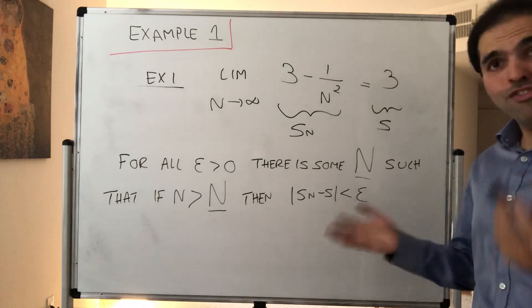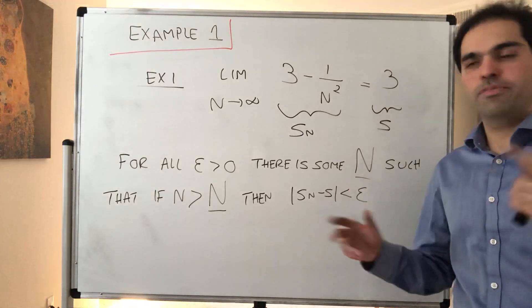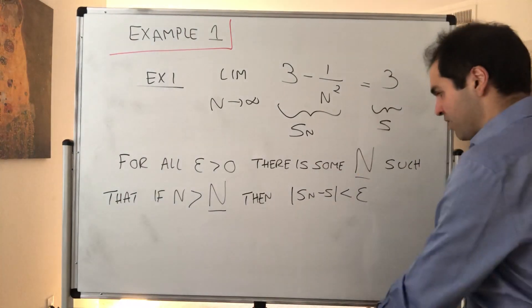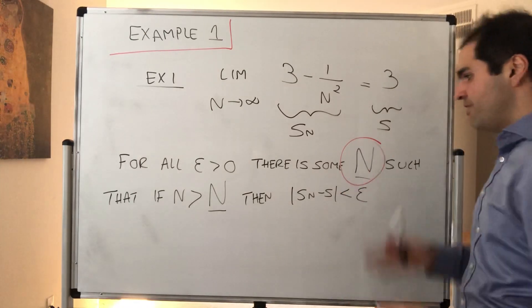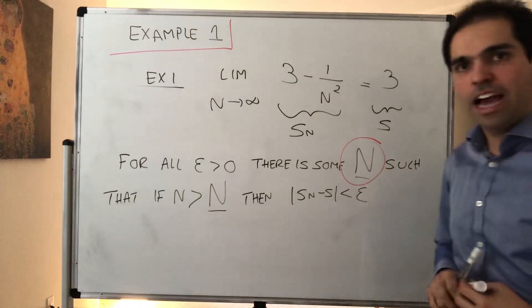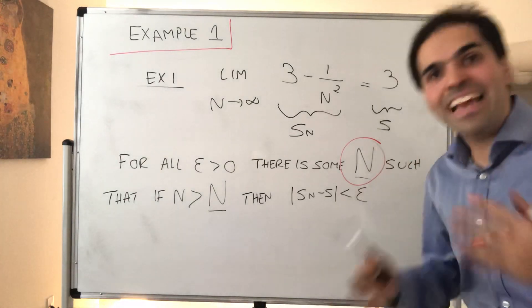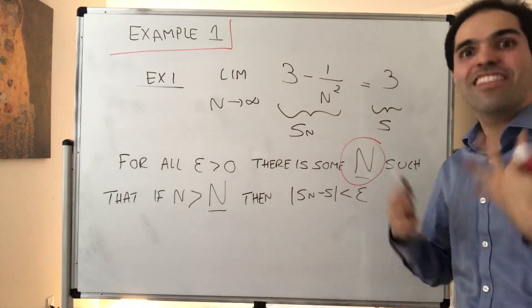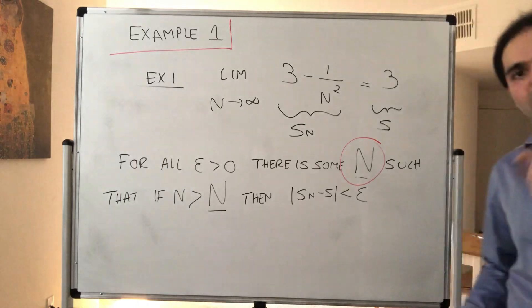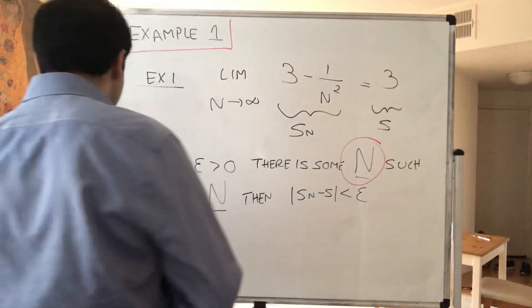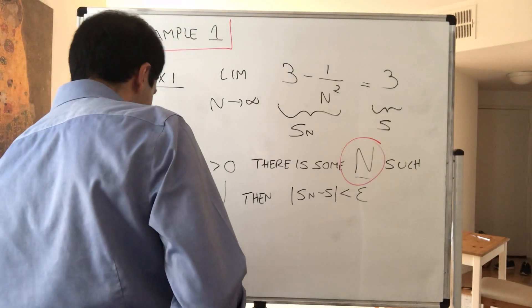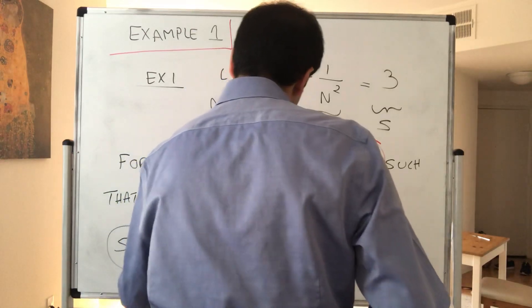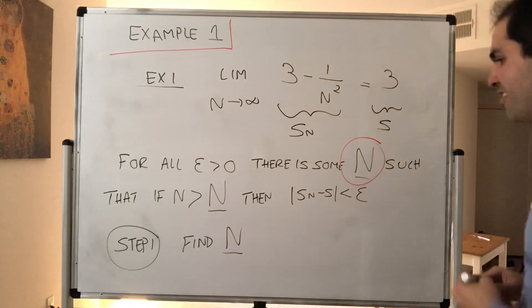Okay, and the proof of this really goes in two steps and you have to understand. The first step is just some scratch work to find this capital N because this is the important thing. Given the error, you have to find some capital N that works, and then the second step is our actual proof. So it's completely normal if it seems that we're doing the same thing twice, but I want to emphasize we're not doing that because the first step is really the scratch work. Okay, so step one, find N. It's like finding Nemo, but for N.